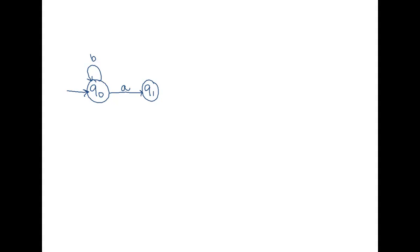So now let's think about if I'm in Q1 — this means I've seen one A. If I see another A, I want to keep track of the fact that I've seen two A's. So let me make another state Q2, and Q2 is going to represent that I've seen two A's. Now if I'm in Q1 and I see some B's, I'm keeping track of how many A's I've seen. So I can see as many B's as I want while in Q1, and I just want to stay — I've only seen one A.